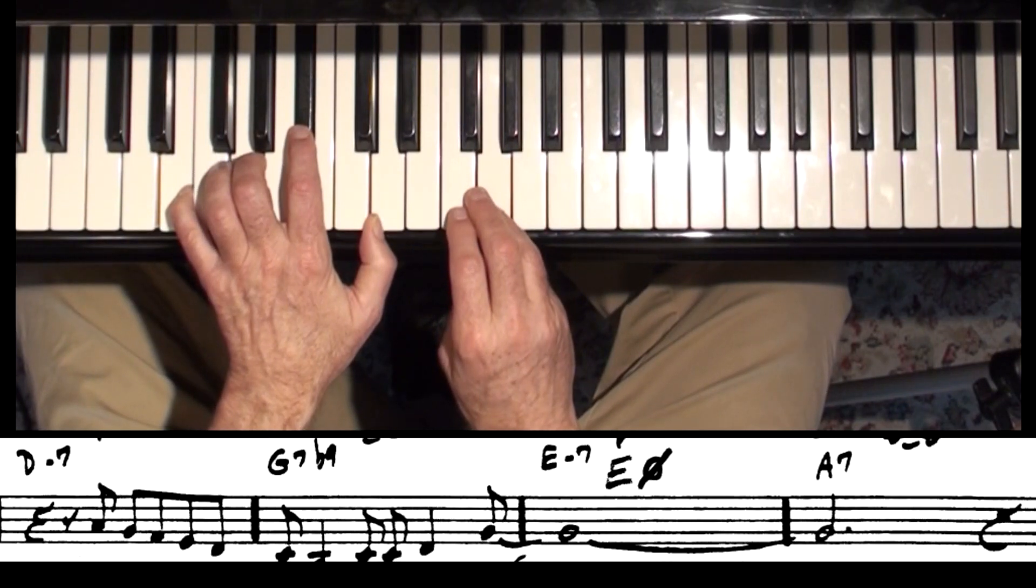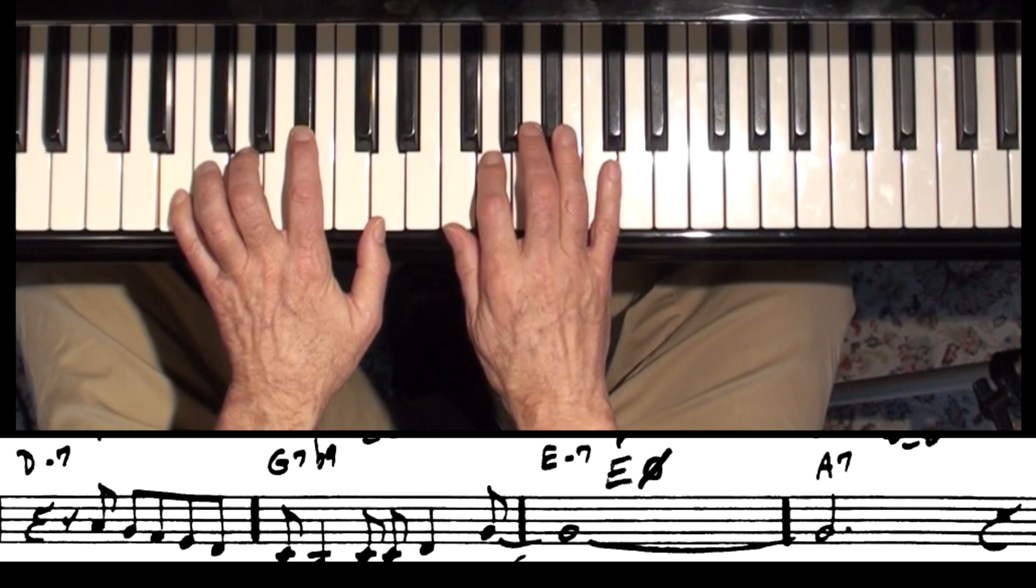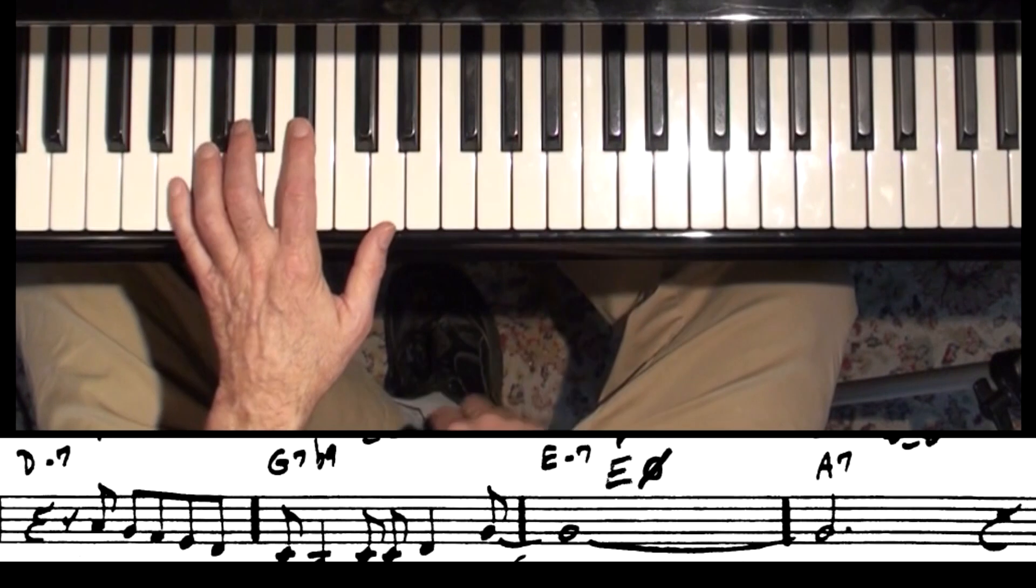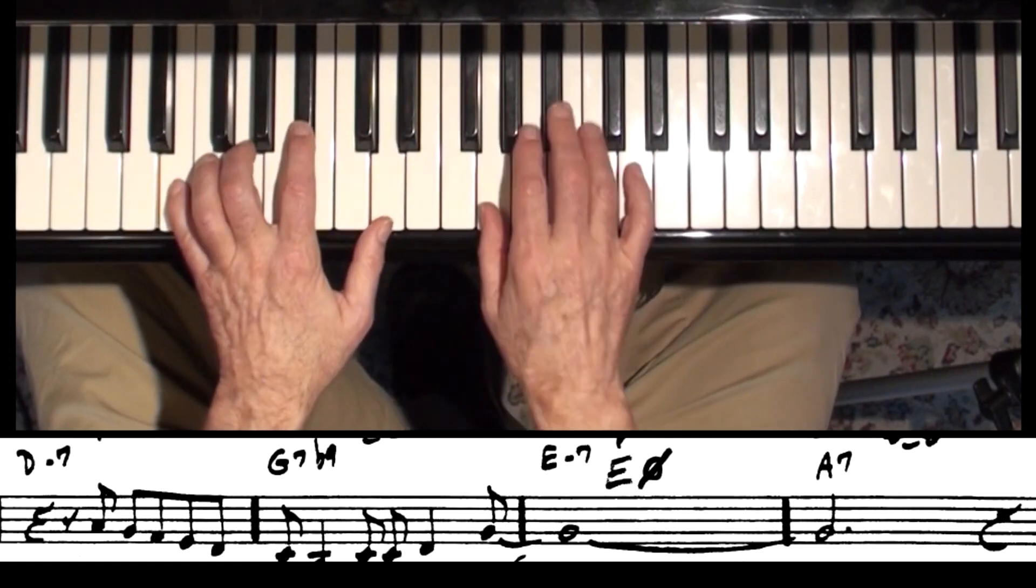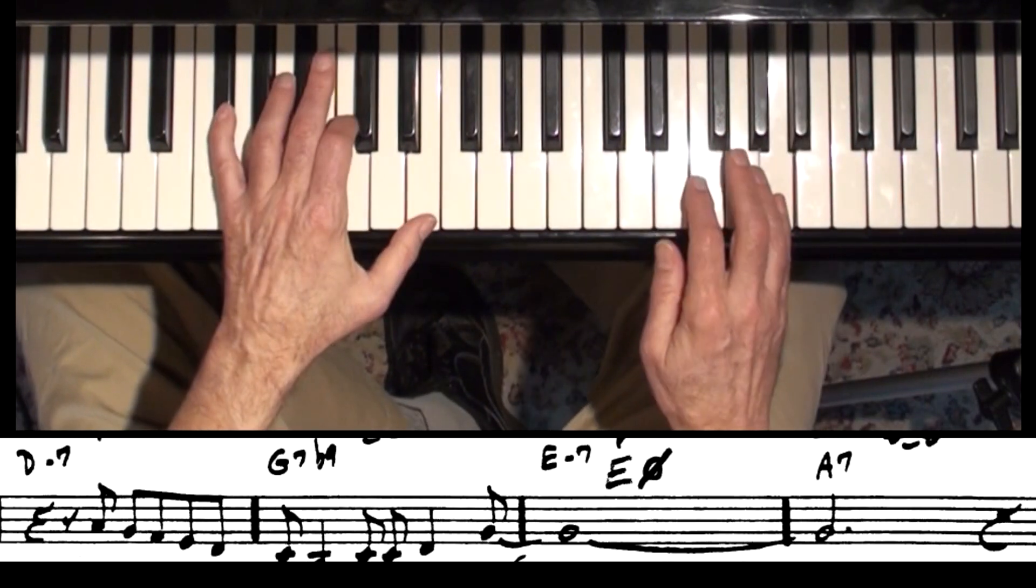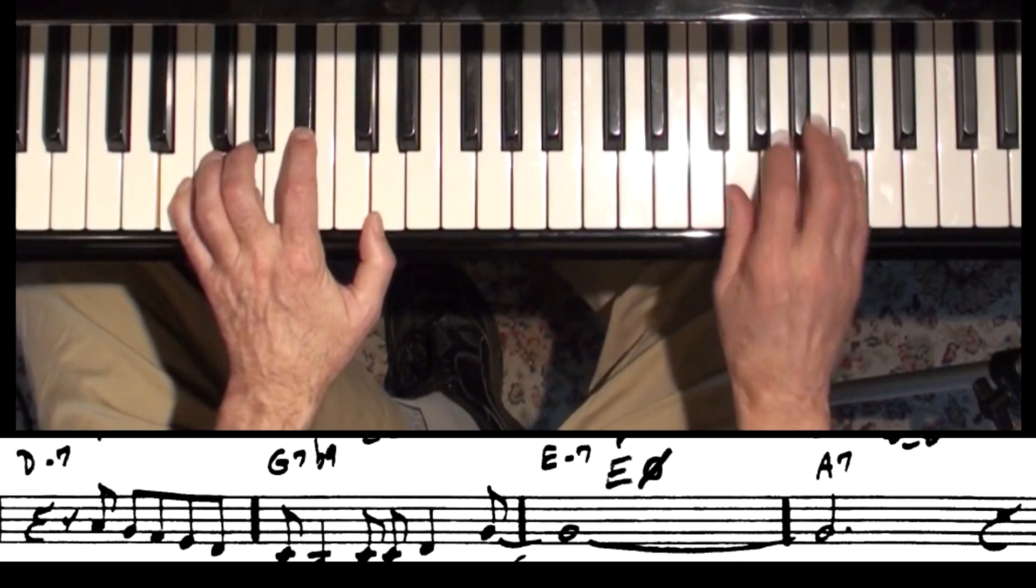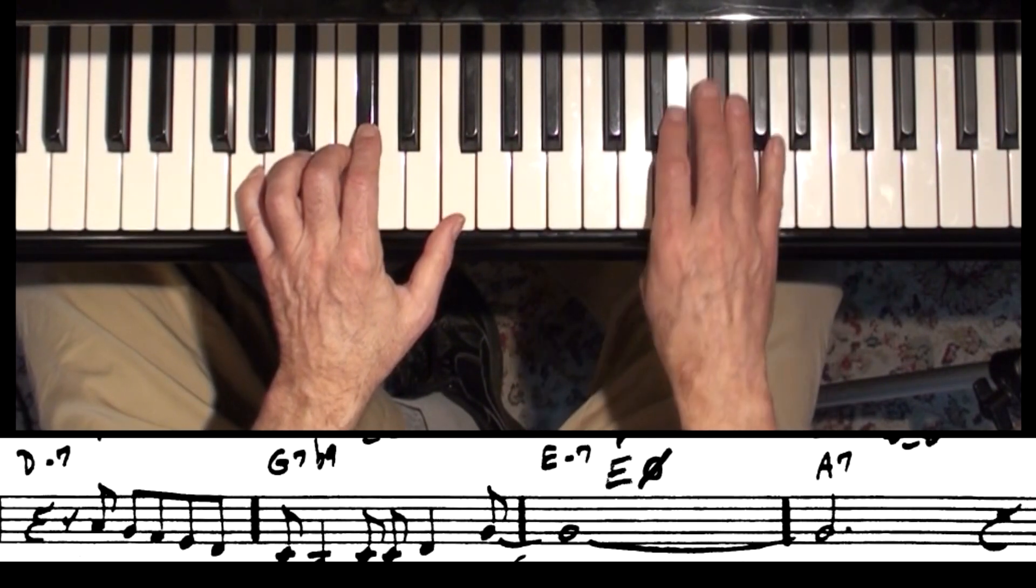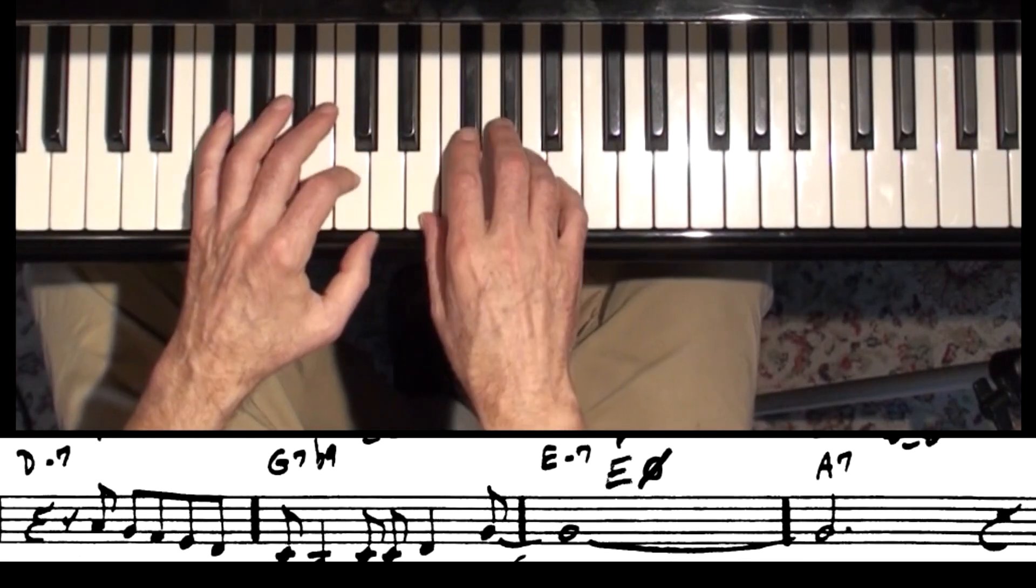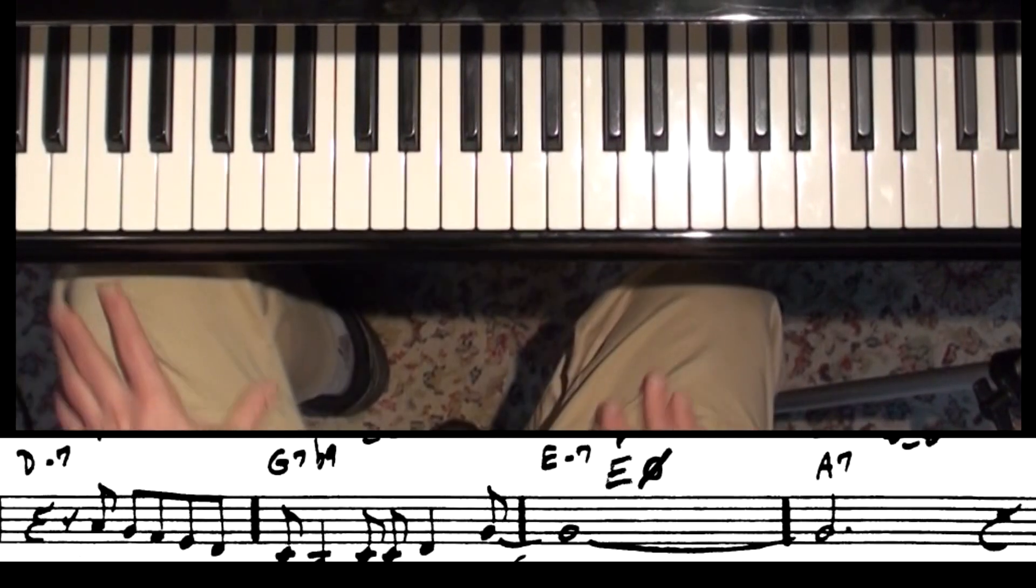E minor 7 flat 5. You can use F major scale. You can put F sharp instead. It's always nice to work that line back in there. One, two, three. Great song. And everybody knows it.